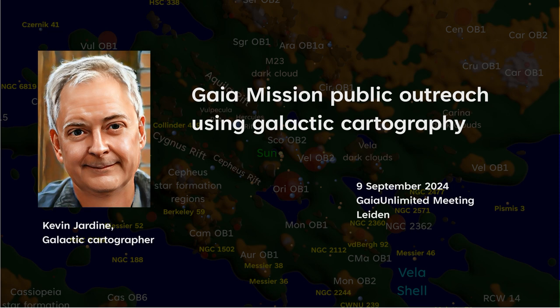Good afternoon. I'm Kevin Jardine, and for the last six years I've been volunteering as a galactic cartographer for DPAC Coordination Unit 9. I typically produce maps for data releases and upon request for special projects. I also make maps for a number of my own Gaia outreach projects. My degree is in pure mathematics and computer science, so I'm not a professional astronomer, but I seem to learn more about Gaia in every data release.